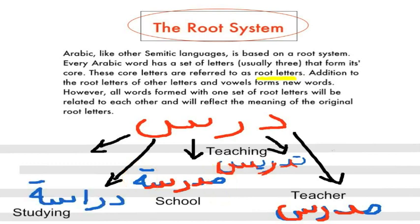The fourth word is dirasa. The root letters are dal, ra, sin. Dirasa means studying. Here you can see the root letters are separated by a long vowel, and at the end there is ta marbuta.